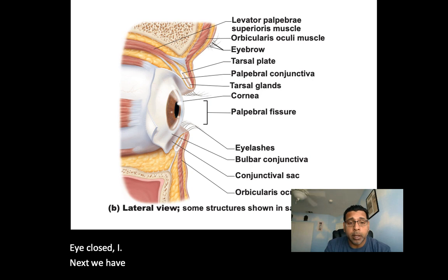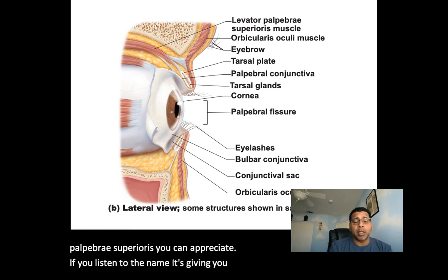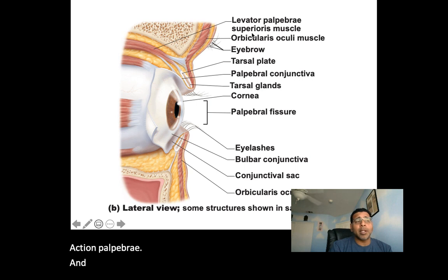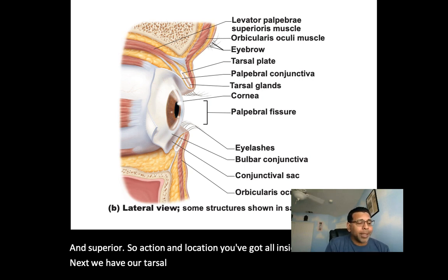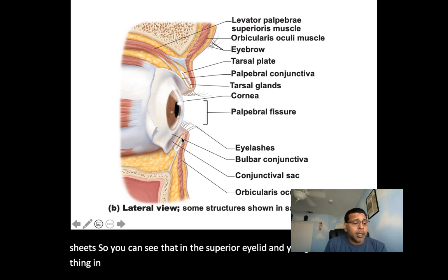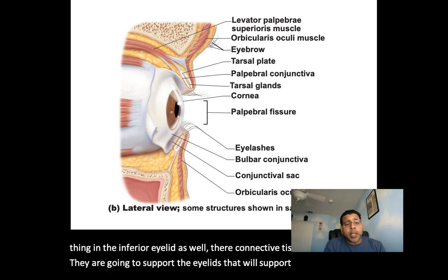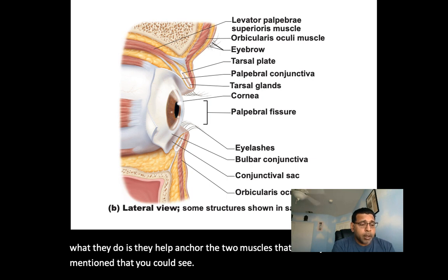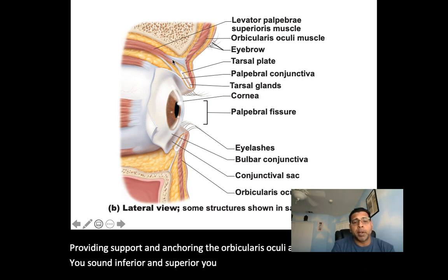Next, we have the levator palpebrae superioris muscle. If you listen to the name, it gives you all the information — levator for action, palpebrae and superioris for location. Next, the tarsal plate consists of connective tissue sheets found in both the superior and inferior eyelids that support the eyelids and anchor the two muscles we've just mentioned.